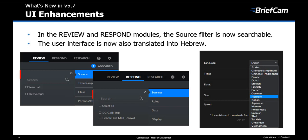Another small tweak that we made is that in the Review and the Respond modules, the source filter is now searchable. We also have the Select All option, and you can use this for example to search for all cameras containing the text First Floor. And the user interface is now also available in Hebrew.